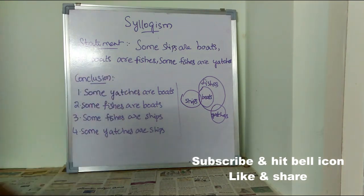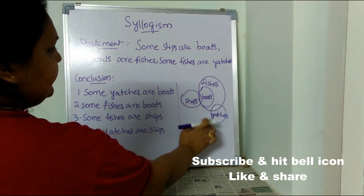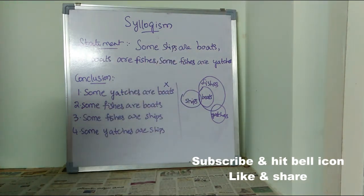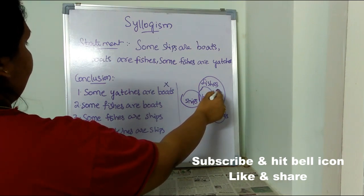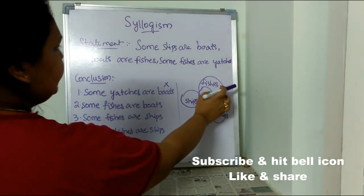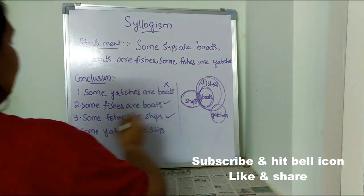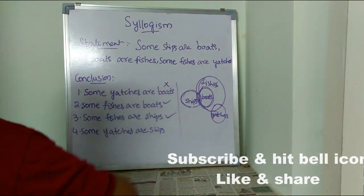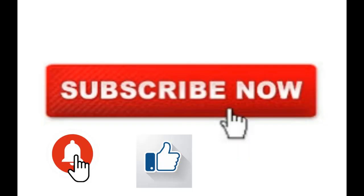Conclusion one: some yachts are boats — no, there is no relationship between yachts and boats in the diagram, so conclusion one is wrong. Conclusion two: some fishes are boats — yes, there is a common point between fishes and boats, so this is correct. Conclusion three: some yachts are ships — there is no relationship between yachts and ships, so this is wrong. The only correct conclusions are: some fishes are boats.